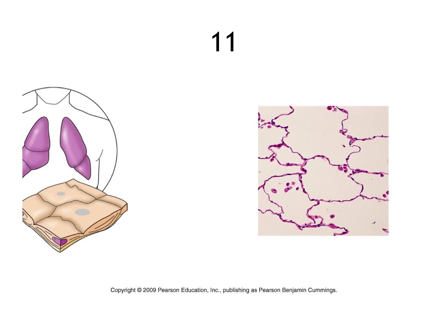This is simple squamous. The word squamous means fish scale and these kind of look like scales. A lot of people think the outlines on the right are individual cells — this can look like adipose tissue — but squint and look for individual flat cells with individual nuclei. These are found at the bottom of your lungs; the edges of the little compartments are simple squamous, some of the thinnest cells in your body, allowing oxygen to pass through quickly. It's epithelial with a free surface, one layer thick.